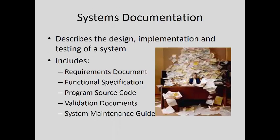Systems documentation describes the design, implementation, and testing of the system. This includes the requirements document, functional specification, program source code, validation documents such as testing guides, and a system maintenance guide. At some point the code is documentation; however, it should not be the only source. We will be omitting a lot of this documentation during this year's software engineering class, but some system documentation is still going to be necessary.